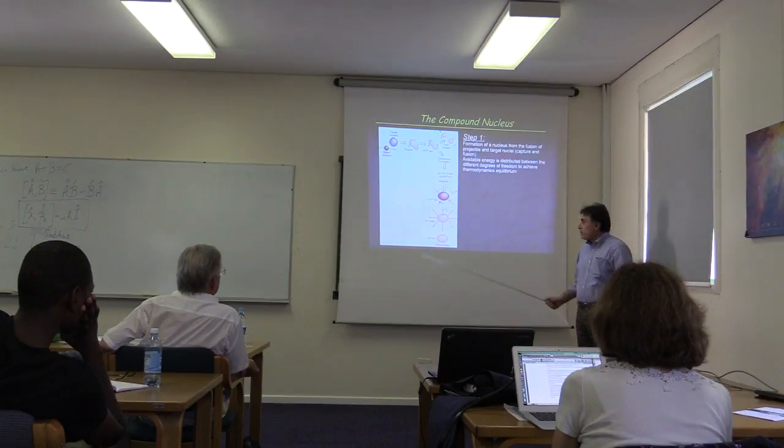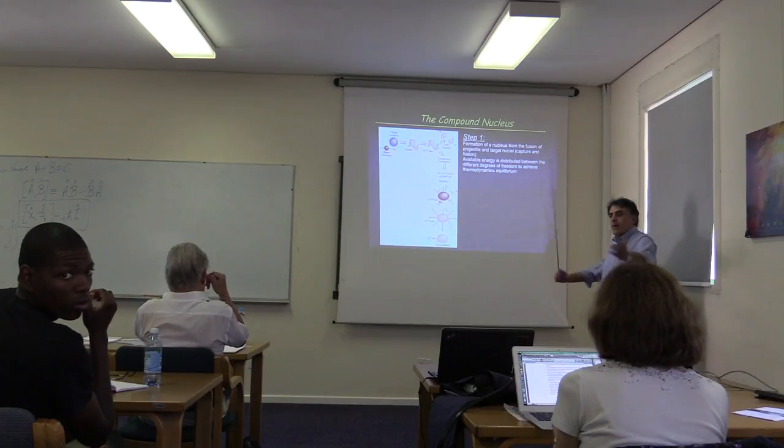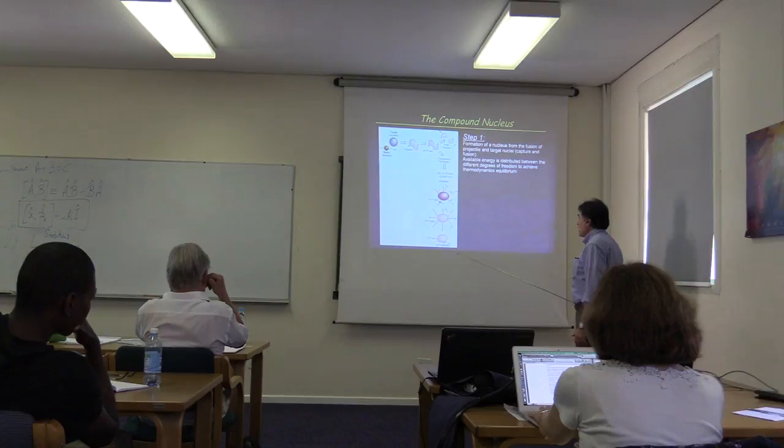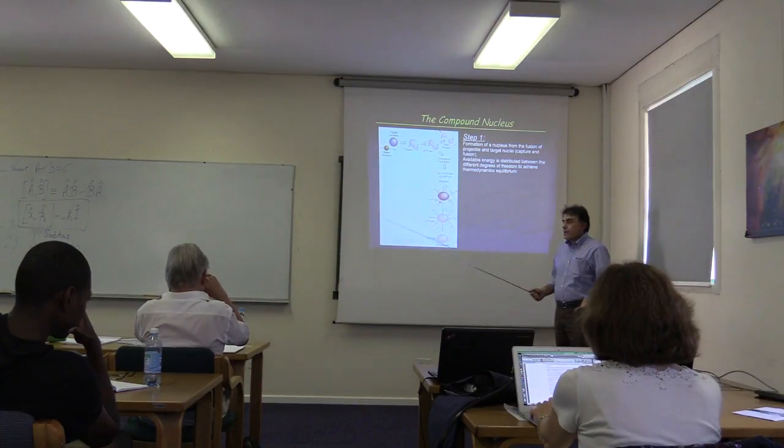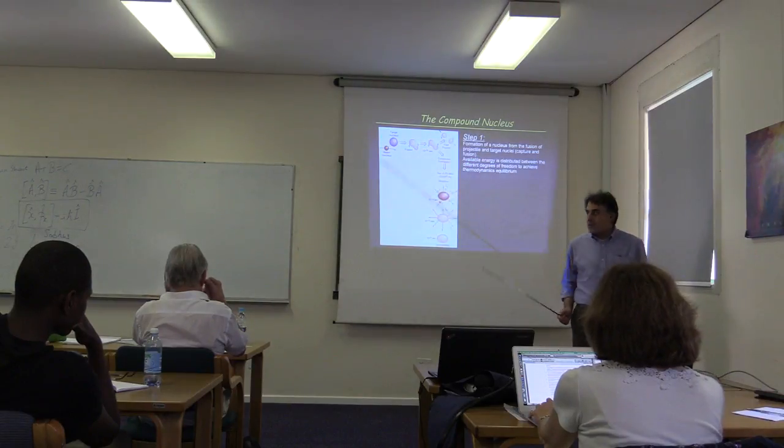After some time, the hope is that the system will decay. How? By evaporating particles, by emitting particles all around. And the particles that can be emitted can be of any kind. It can be neutron, proton, gamma, anything we know, in principle, can be emitted by this new system.